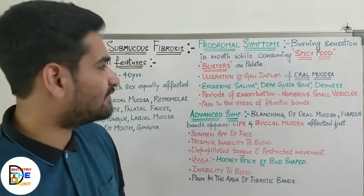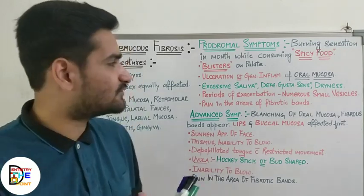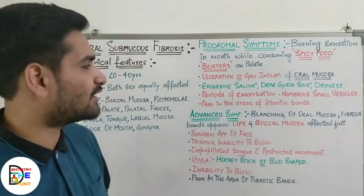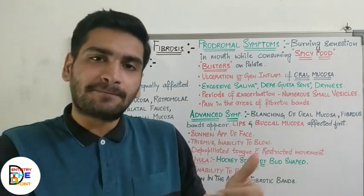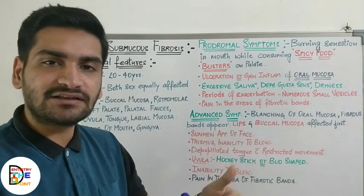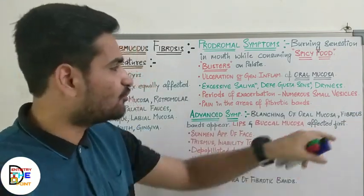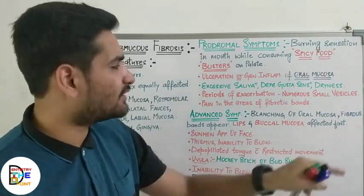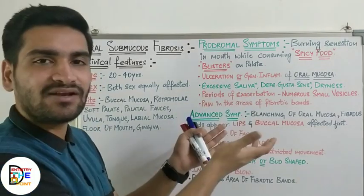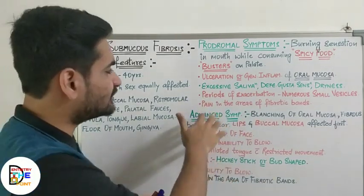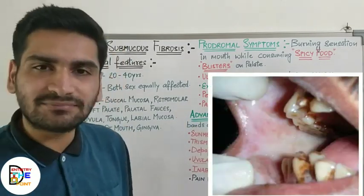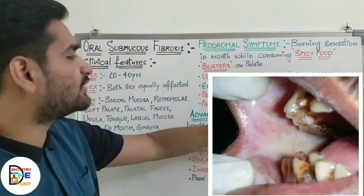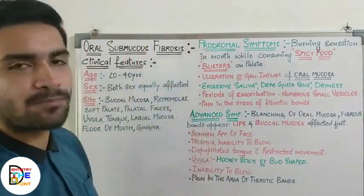Other prodromal symptoms include excessive salivation, defective gustatory sensation, and sometimes dryness of the mouth. There are periods of exacerbation where the patient presents with numerous small vesicles, occurring every three months to one year depending on severity. The patient also experiences pain in the areas where fibrotic bands are present — pressing those bands triggers pain.